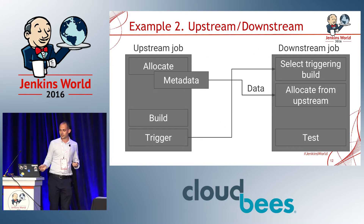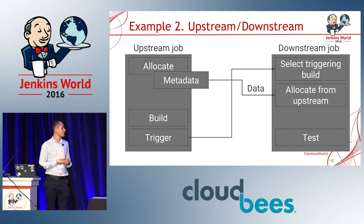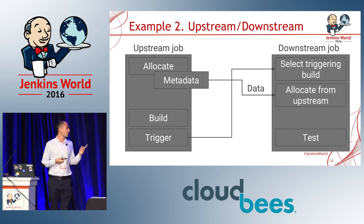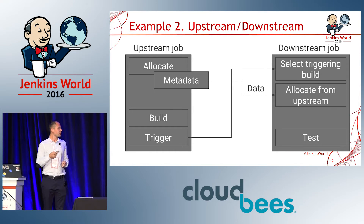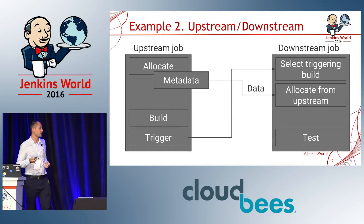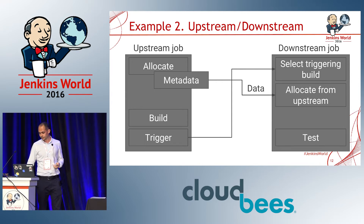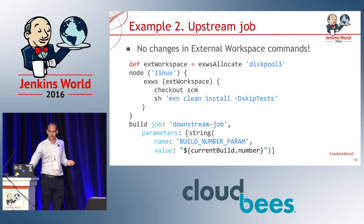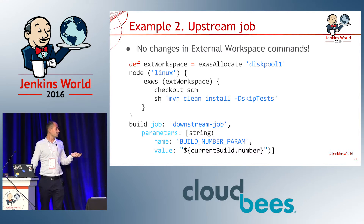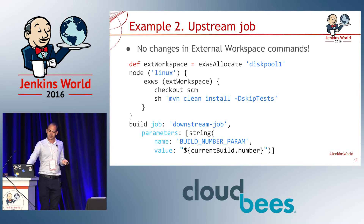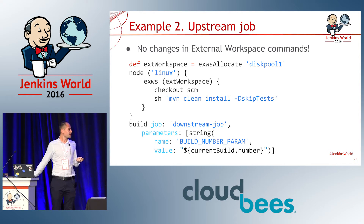The second example shows how to reuse the same workspace on two different jobs. In the upstream job, you allocate the workspace, build it, and trigger the downstream job. In the downstream job, you select the triggering build by making use of the Run Selector plugin. Then you can allocate from the upstream and run the testing. In the upstream pipeline script, at the end I trigger the downstream job and pass in as a parameter the build number, which takes as its value the current build number.